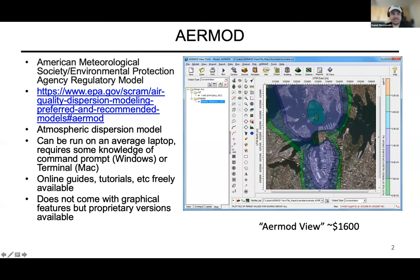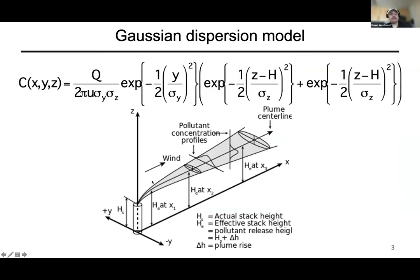If you want it to look like a nice picture, there's some external software available — it's not free. This is a screenshot from AERMOD View, which is proprietary software that takes the output from AERMOD and plots it nicely in a graphical user interface, allowing you to change features, look at different things, zoom in, et cetera. That version comes with a bit of a cost, but in theory anyone can run AERMOD itself. As Peter mentioned, it uses mostly Gaussian dispersion modeling.